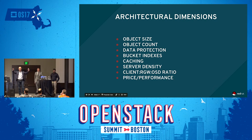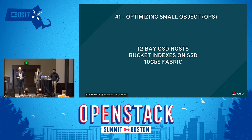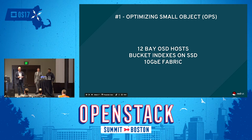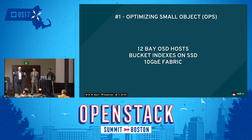We're going to start with the conclusions, then focus on the supporting empirical data and concepts in the middle, and finish with the same conclusions. There are four conclusions. Conclusion number one: when optimizing for small object operations per second, a 12-bay OSD host was optimal versus more dense servers. Likewise, placing bucket indexes on SSDs with a 10-gig fabric — as opposed to, for instance, a 40-gig fabric.